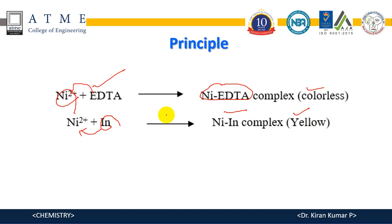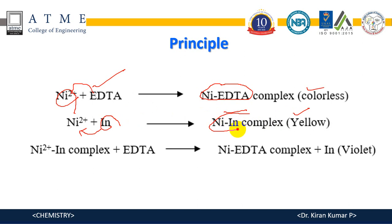The sample is titrated with EDTA which forms the colorless complex and the nickel also reacts with the nickel indicator complex at last to form nickel EDTA complex and indicator is free. The color of the muroxide is violet which is imparted and gives the endpoint.